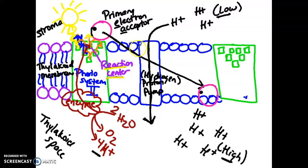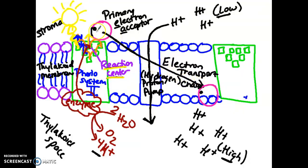This whole journey is given a name — there's a lot of new terminology. It's called the electron transport chain. This line signifies the electron transport chain: the movement of the primary electron acceptor from right outside photosystem 2, through the hydrogen pump, to the base of the next photosystem, called photosystem 1.